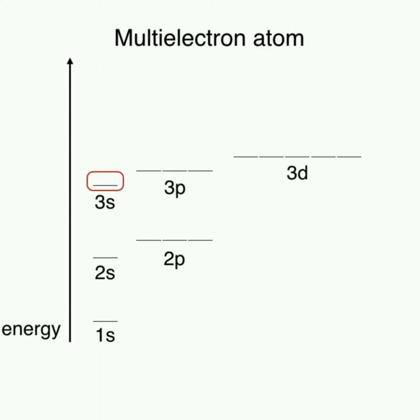the 3s orbital has less energy than the 3p orbitals, which have less energy than 3d orbitals. The same holds true for 2s orbitals and 2p orbitals.